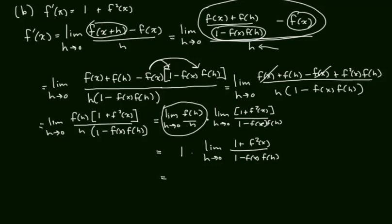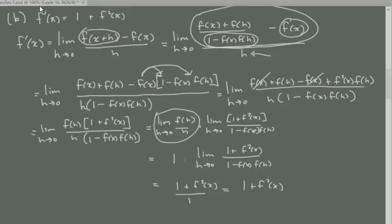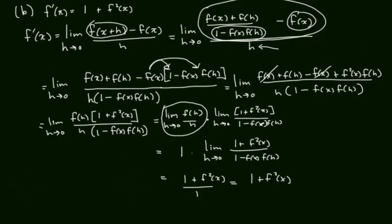And then in our final property, we know the limit as h goes to 0, of f of h is equal to 0, which is going to lead us to 1 plus f squared x over 1, which equals 1 plus f of x squared, which is what we wanted to prove in the very beginning. Q.E.D.